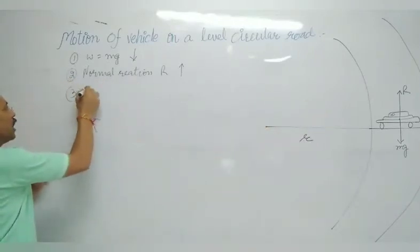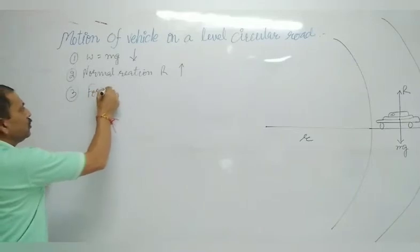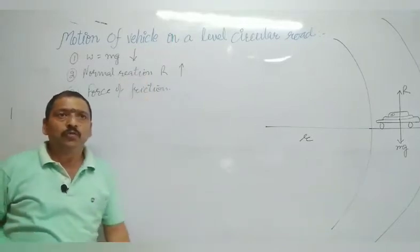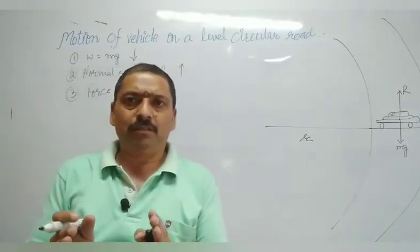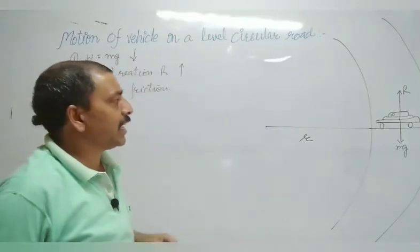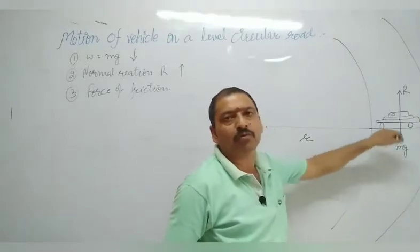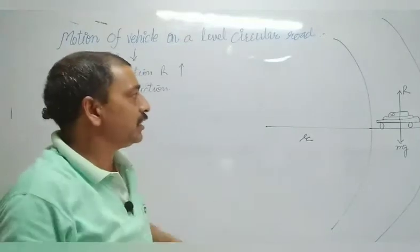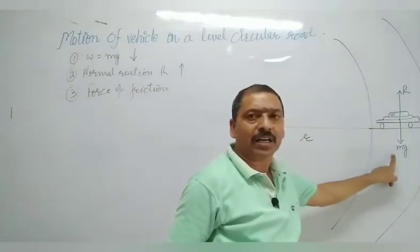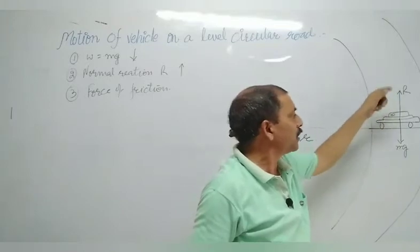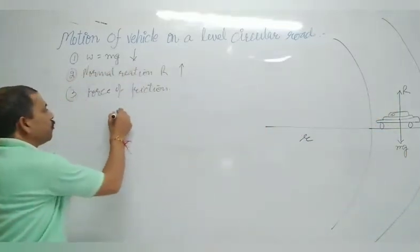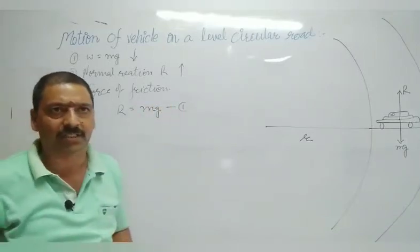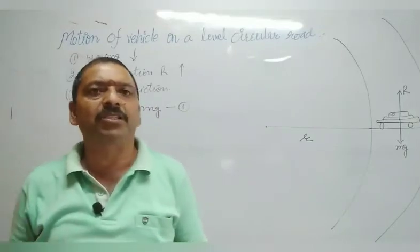These are the three forces acting on the vehicle. Since there is no upward or downward movement of the vehicle, the normal reaction R must be equal to mg. So we can write R = mg. This is equation number one: the weight of the car is balanced by the normal reaction.